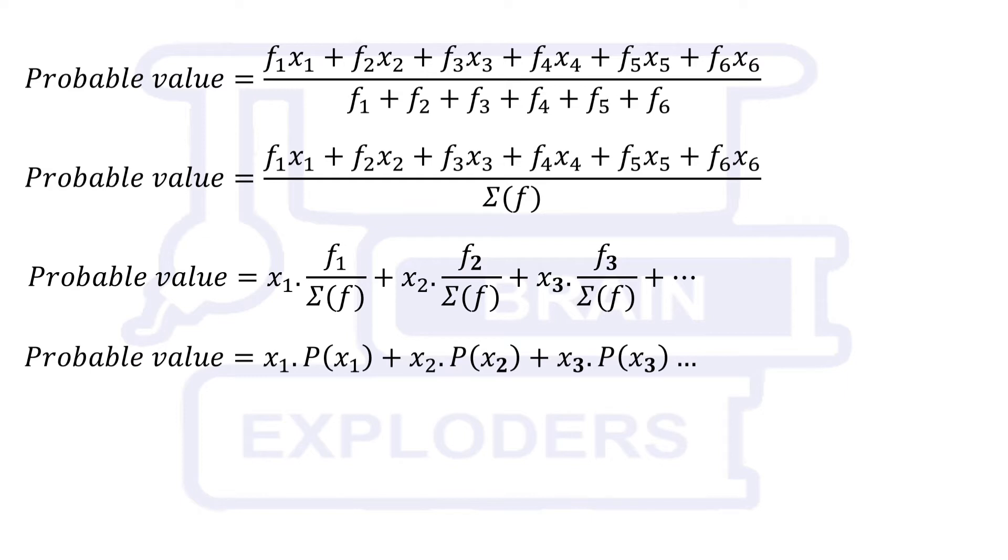In this way, we find that probable value or expected value is x1 times probability of x1 plus x2 times probability of x2 and so on. We will use this result later.